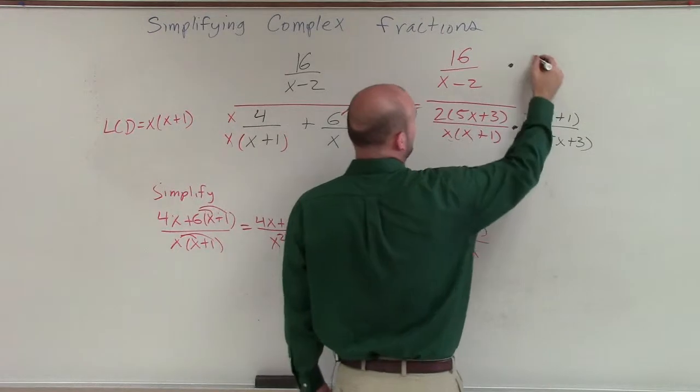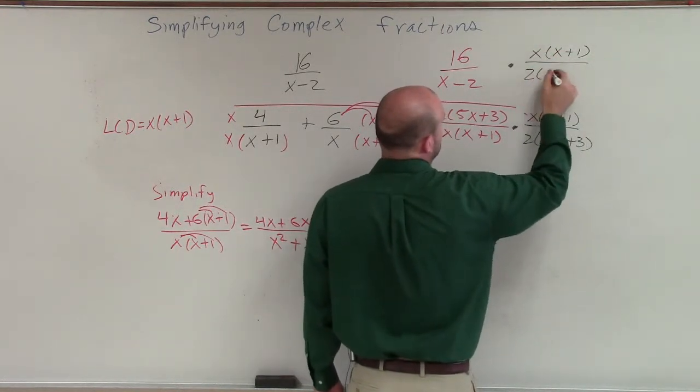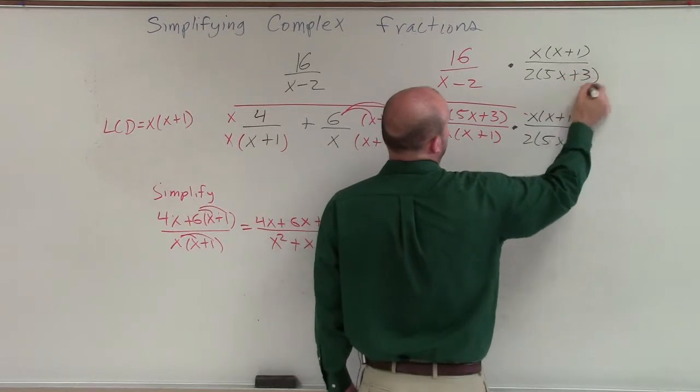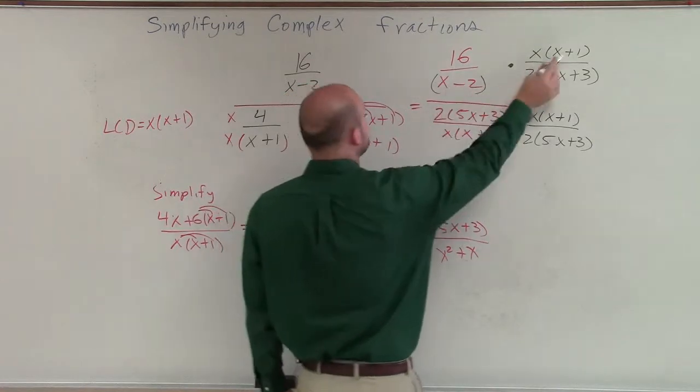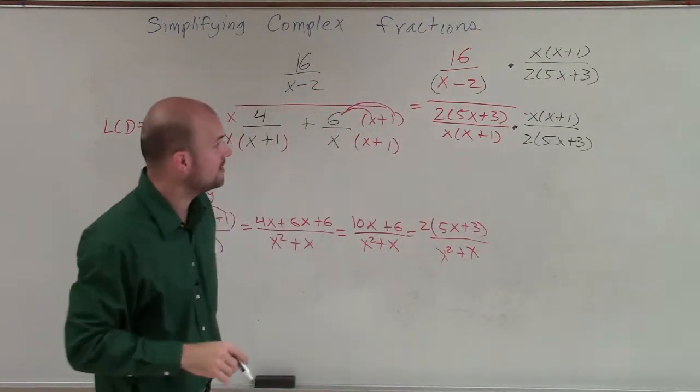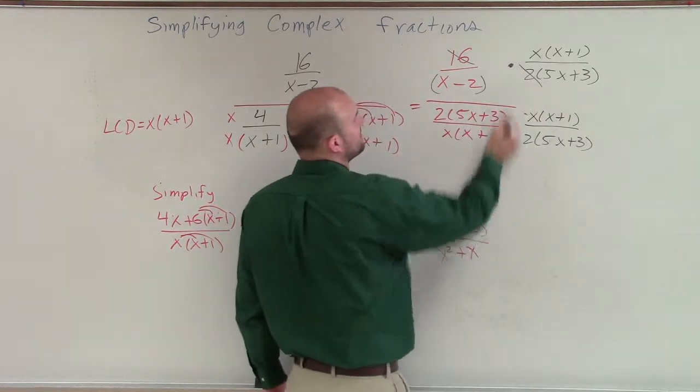And we do that on the top and the bottom. So it's [x(x+1)] / [2(5x+3)]. All right? Now, what we notice here is when we multiply this across, our (x-2) cannot divide out with our (x+1), nor can our x divide out. However, our 16 can be divided by 2, leaving us with 8.